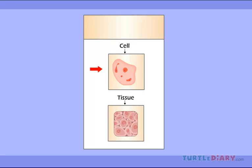Our body contains hundreds of different cells that do different jobs. Cells of the same type usually grouped together to form tissue.